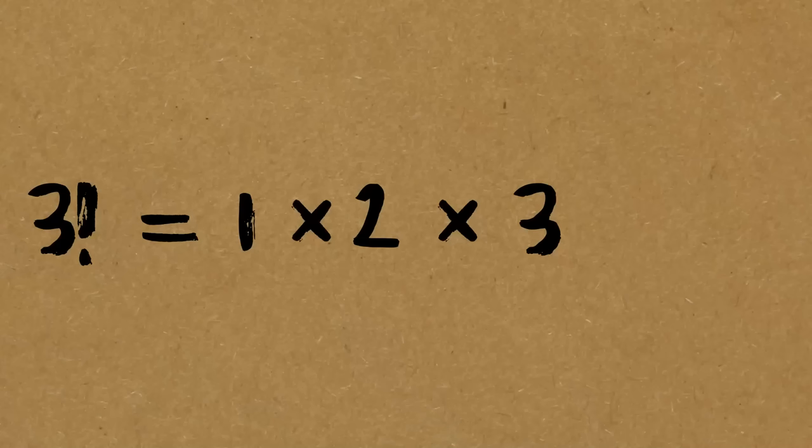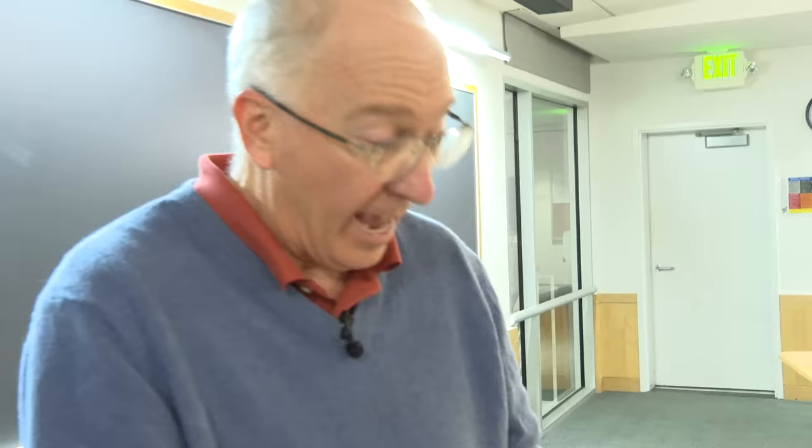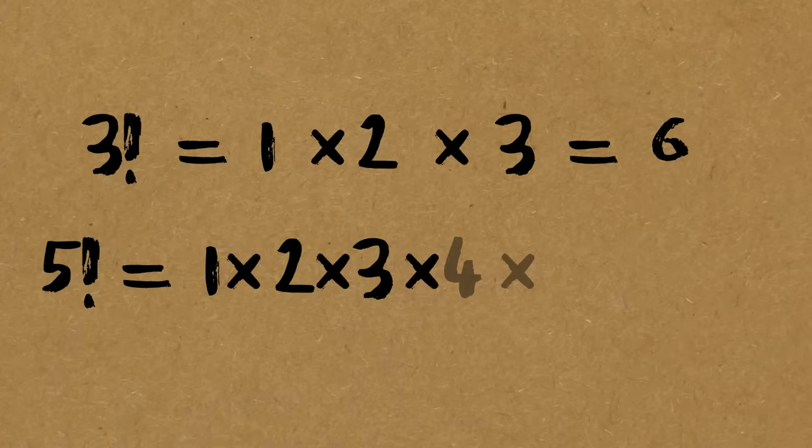Now of course I didn't need to write the 1 because 1 times whatever comes after is still just whatever comes after, but this is 6. Everybody probably remembers the factorial in general is the product of all of the integers between 1 and whatever number you write last. So the second example, I'm going to skip 4 and go straight to 5 factorial, which is 1 times 2 times 3 times 4 times 5, and that after you multiply it all out is actually 120.